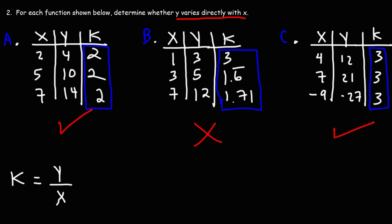So that's how you could determine whether Y varies directly with X or not. It's by calculating the constant of variation. If it's the same for each pair of X and Y values, then the answer is yes, Y varies directly with X.